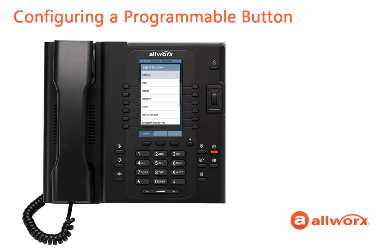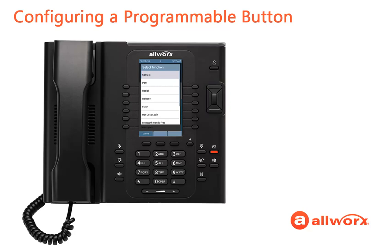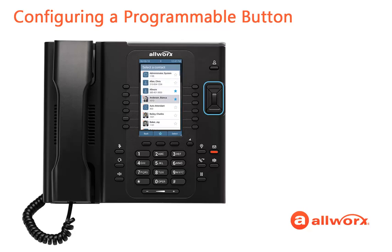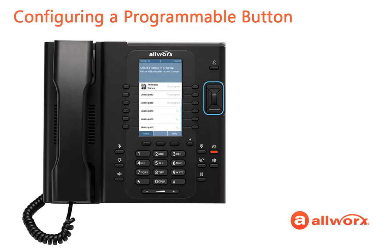The phone displays the Select Function Button screen. Use the up and down navigation keys to scroll through and highlight the function option that you want to configure on the programmable button. Once you have selected the function, press the Select Button button. When selecting the Contact function, you are also required to highlight and select which user to assign to the programmable button.